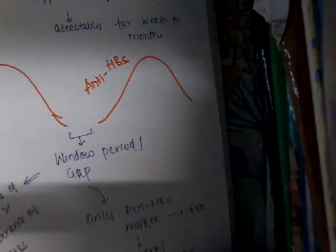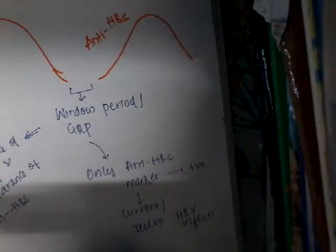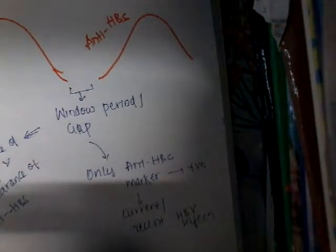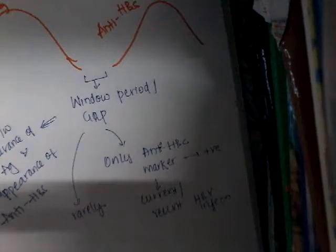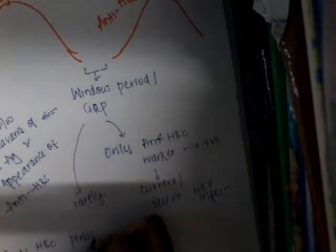Anti-HBc is the only marker which represents current or recent HBV infection during the window period. This window period is rarely encountered. Whenever there is only anti-HBc increase, that may represent the window period. Anti-HBc normally persists longer than anti-HBs.